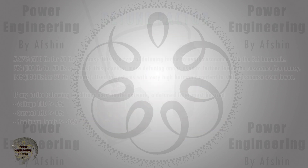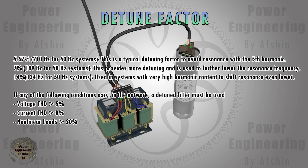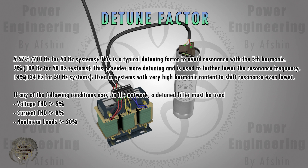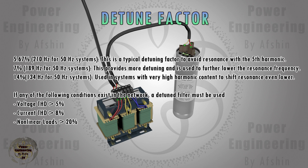The detuning factor is a percentage that indicates how much the reactor detunes the resonance frequency. Common detuning factors are 5.67%, 7%, and 14%. The detuning factor value depends on the extent of harmonic distortion in the network. A detuned reactor is placed in series with each capacitor in the PFC system.